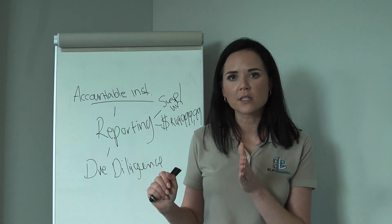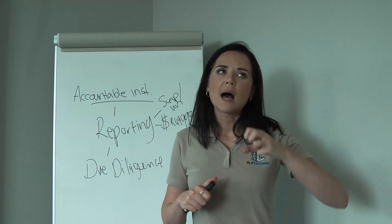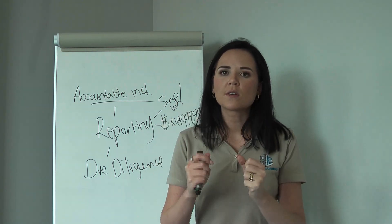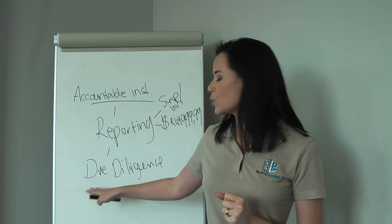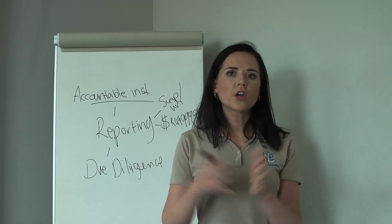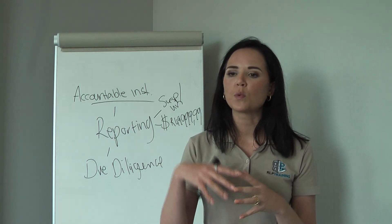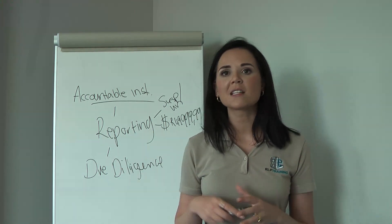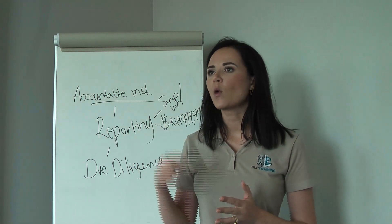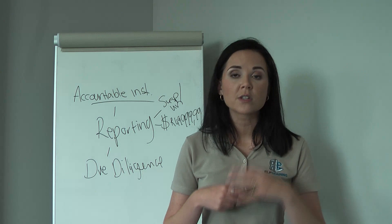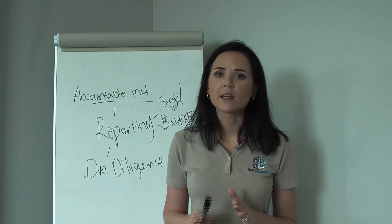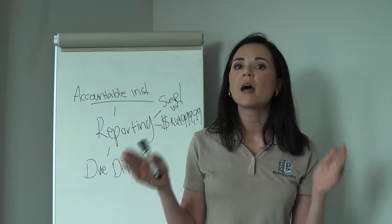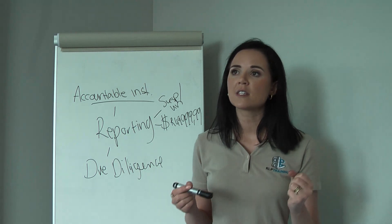During an ongoing business relationship, the accountable institution must also conduct ongoing due diligence. You may have received a notification from your bank asking you to visit your nearest branch for FICA purposes — that is ongoing due diligence. The requirement is to monitor transactions, question any unusual, complex, or unusually large transactions, and at any point if due diligence cannot be conducted, the institution must stop business.